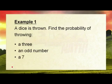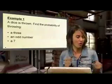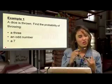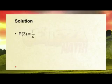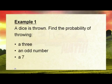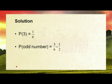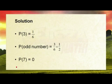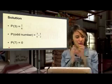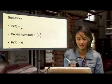And an odd number — how many odd numbers are there in the sample set from one to six? One is odd, three is odd, and five. So that's three over six. But remember, we always simplify — so we simplify to one over two, which is a 50% chance. And a seven? There's no seven in the sample set one to six, so you get zero.